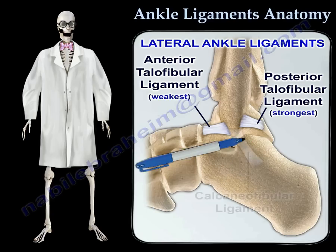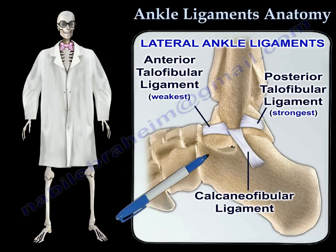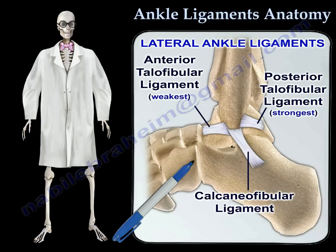The calcaneofibular ligament's origin comes from the anterior border of the fibula, about one centimeter proximal to the distal tip. It then inserts into the calcaneus distal to the subtalar joint and deep to the peroneal tendon sheath. The lateral ligaments are the most commonly injured ligaments in the ankle.